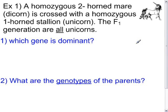Example 1 of monohybrid crosses for Biology 10. A homozygous two-horned mare, a dicorn, is crossed with a homozygous one-horned stallion, a unicorn. The F1 generation are all unicorns. Which gene is dominant and what are the genotypes of the parents? Pause the video, answer these two questions, and then unpause.